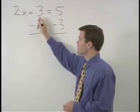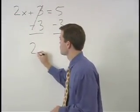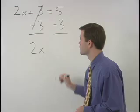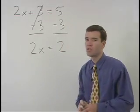On the left, plus 3 minus 3 cancels and we're left with 2x. On the right, 5 minus 3 simplifies to 2.